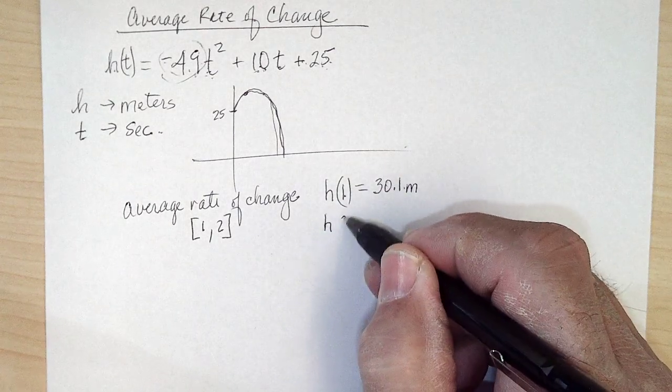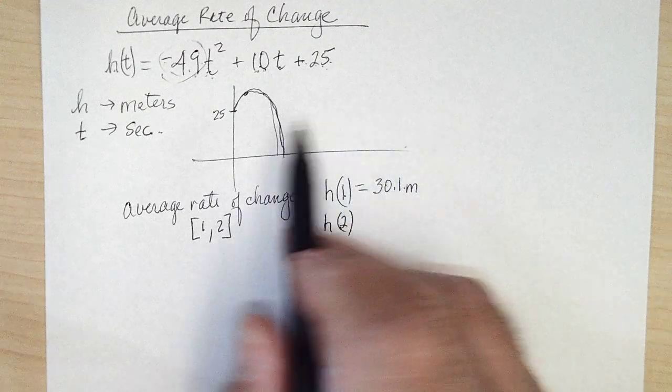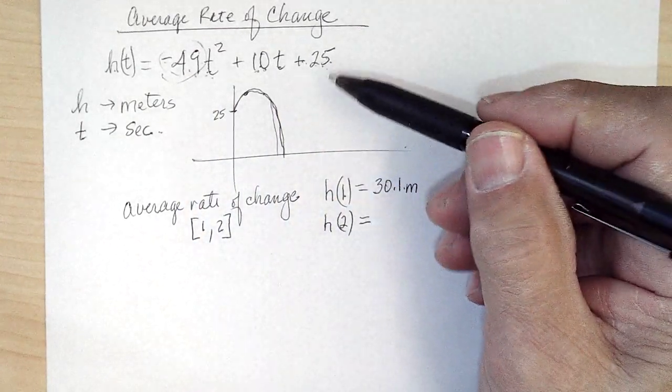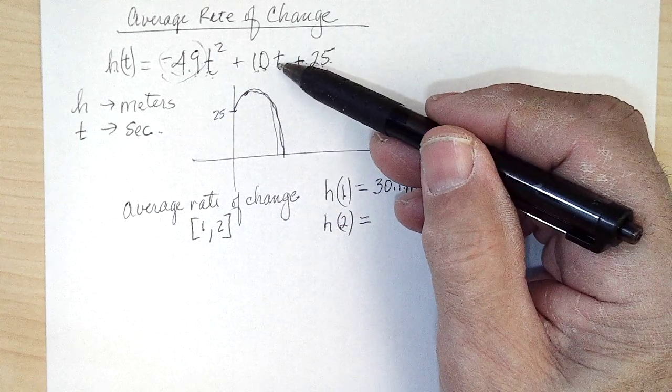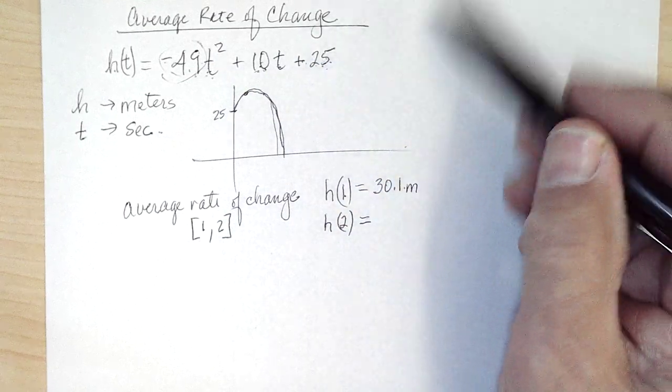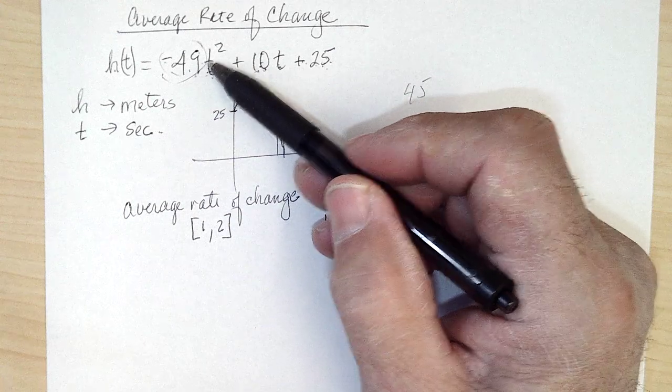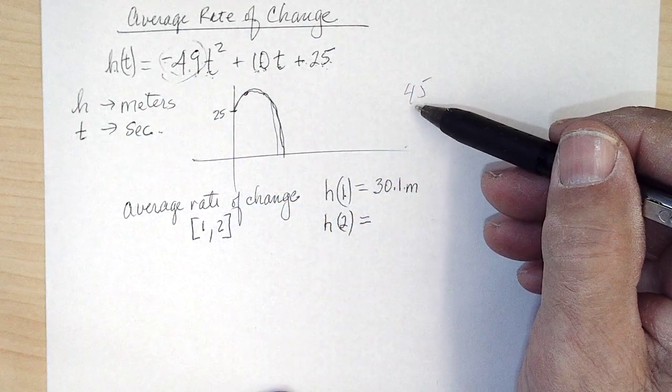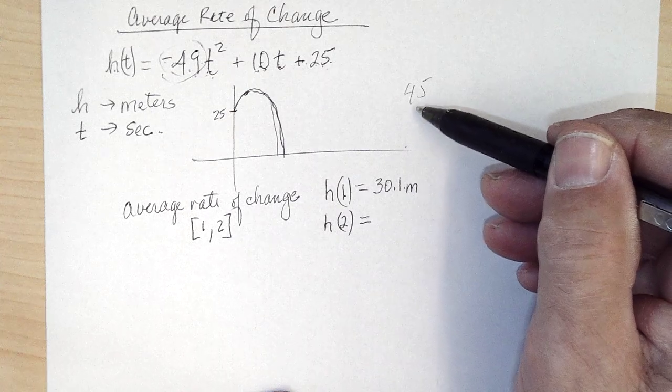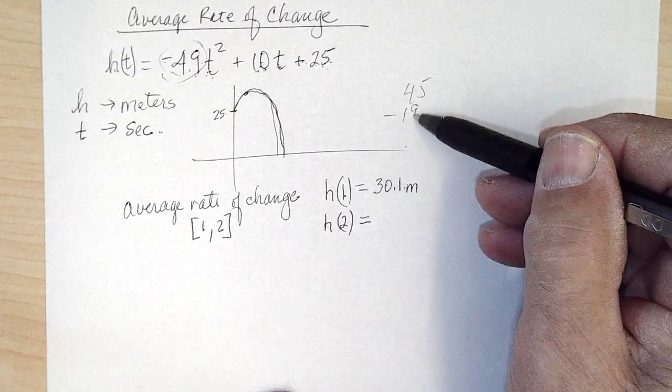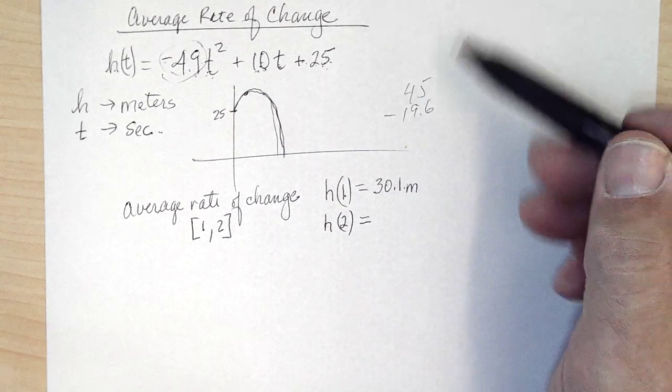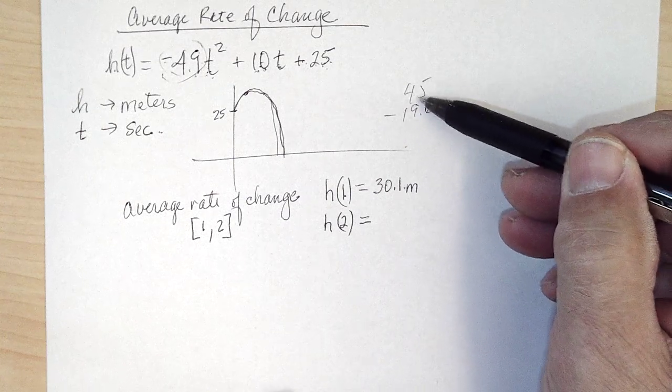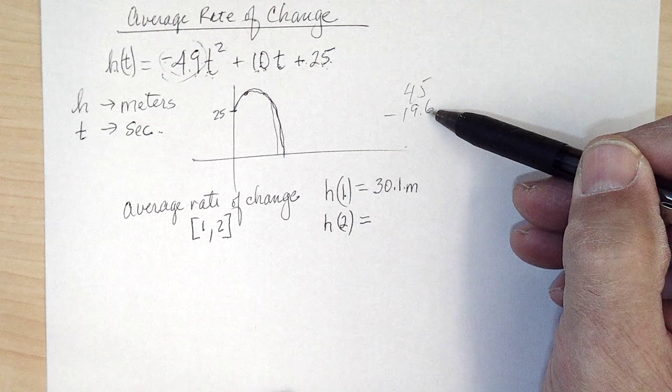And h(2), I would put two in here and figure out that that's 20 plus 25 is 45, and 2 squared is 4, 4 times 4.9—4 times 5 is 20—19.6, negative 19.6. So that works out to be, let's see, 20 off would be 25, so 25.4.